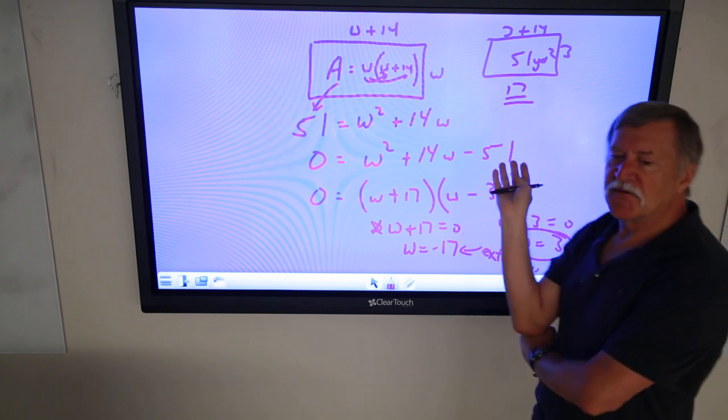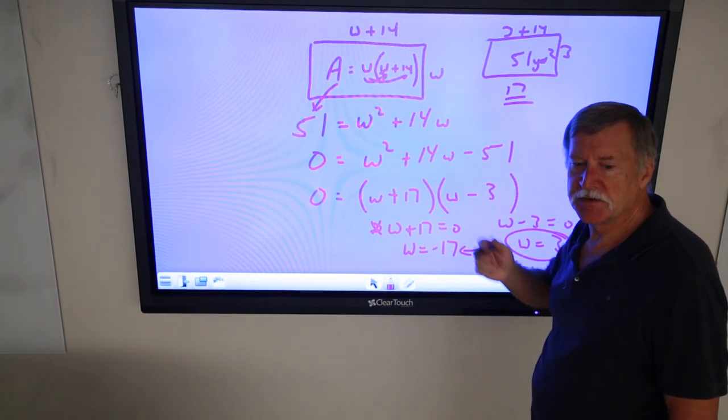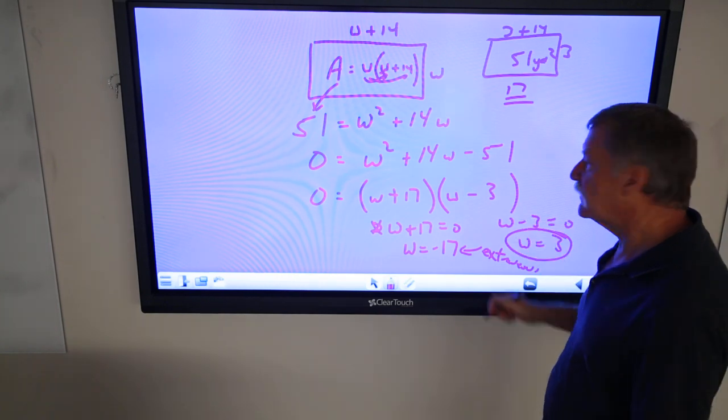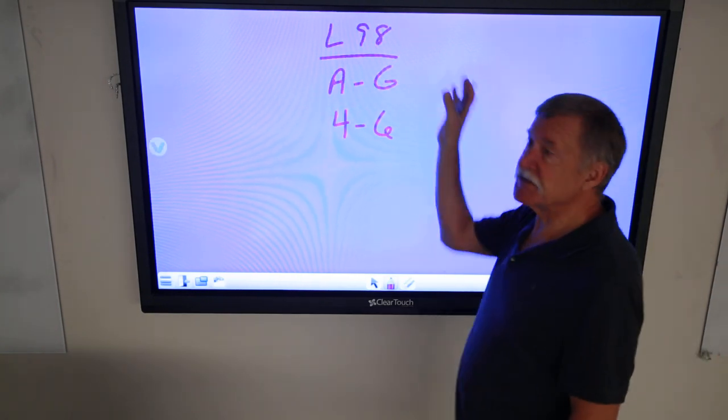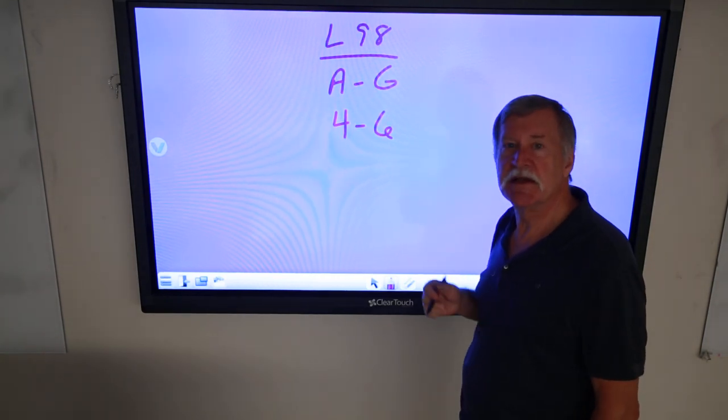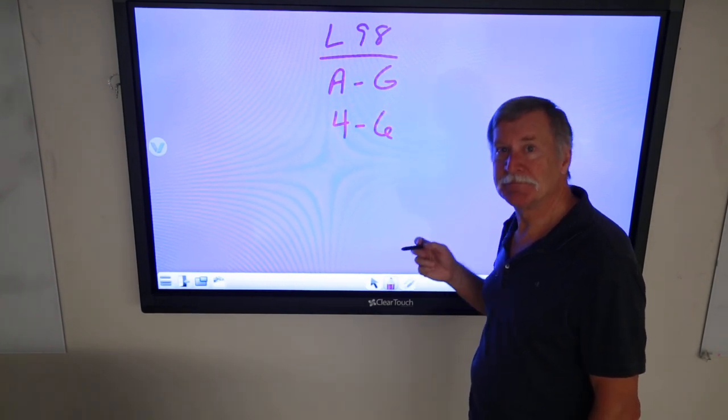So, that's our first step towards solving quadratic equations, using our old friend the GCF and factoring and then setting those factors equal to 0. So, give this a try. We've jumped over to lesson 98 now, don't forget. This is A to G, and 4 to 6 as your last assignment in math for this week. Alright, enjoy.